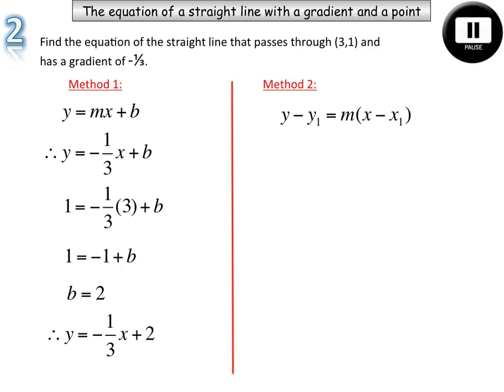Method two, using our other form, substitute our three values in. Now when we get to this state, we need to get rid of the three on the bottom. So when you've got a three on the bottom, to get rid of it, you multiply it by three on the top. So we multiply both sides by three.